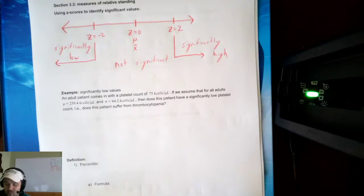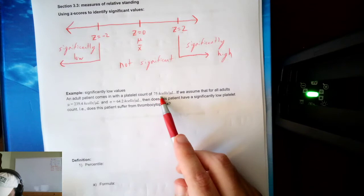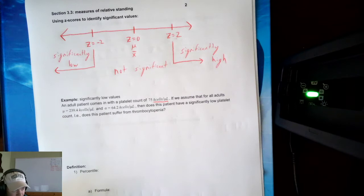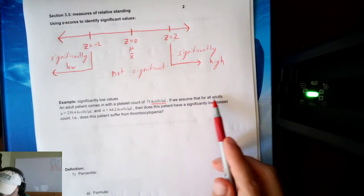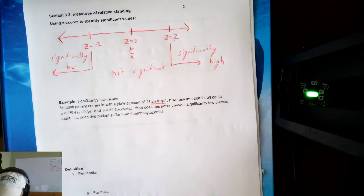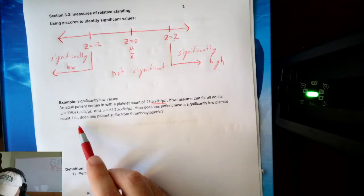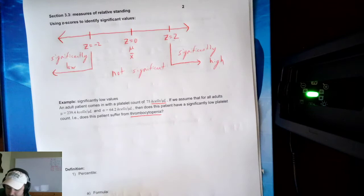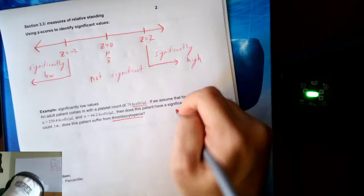Let's look at a real example. An adult patient comes in with a platelet count of 75 kilocells per microliter. If we assume that for all adults the mean is 239.4 kilocells per microliter and the standard deviation is 64.2 kilocells per microliter, does this patient have a significantly low platelet count — i.e., does this patient suffer from thrombocytopenia?